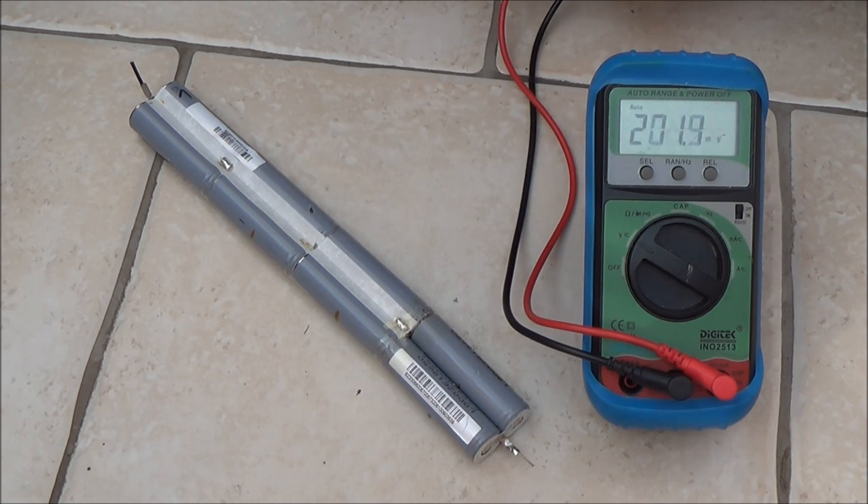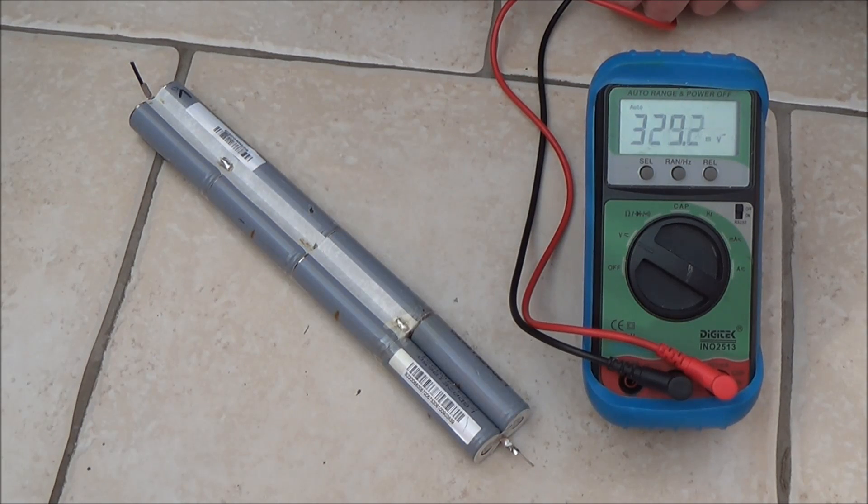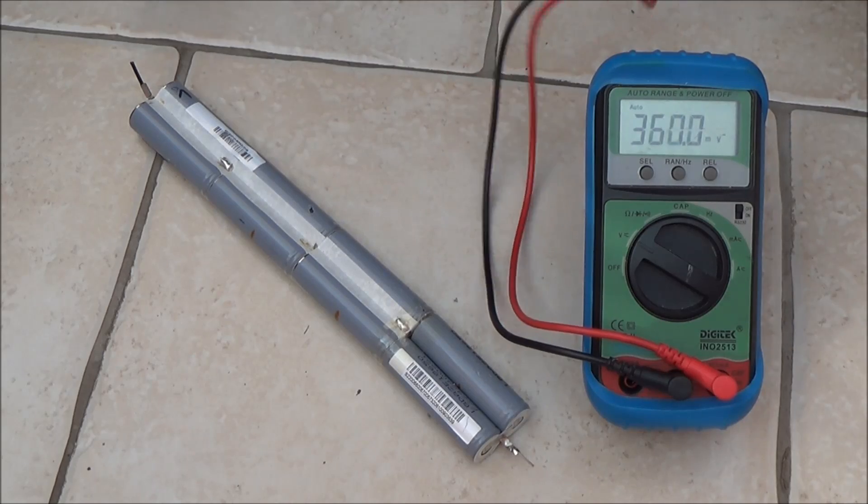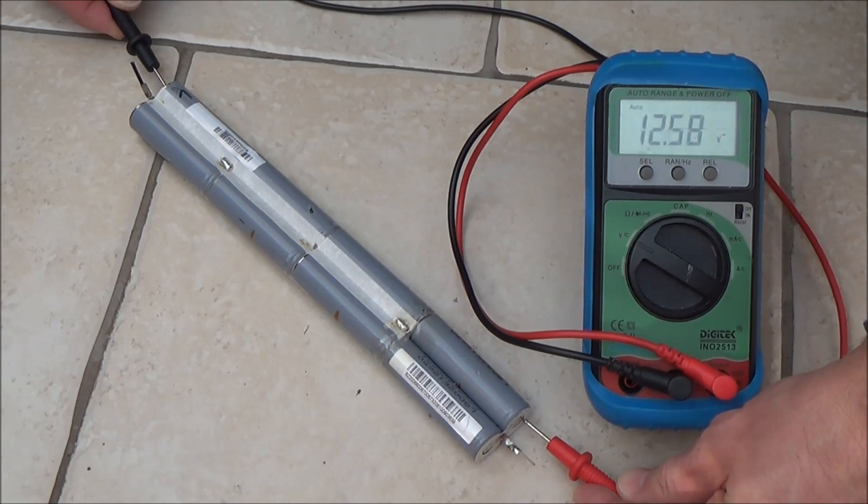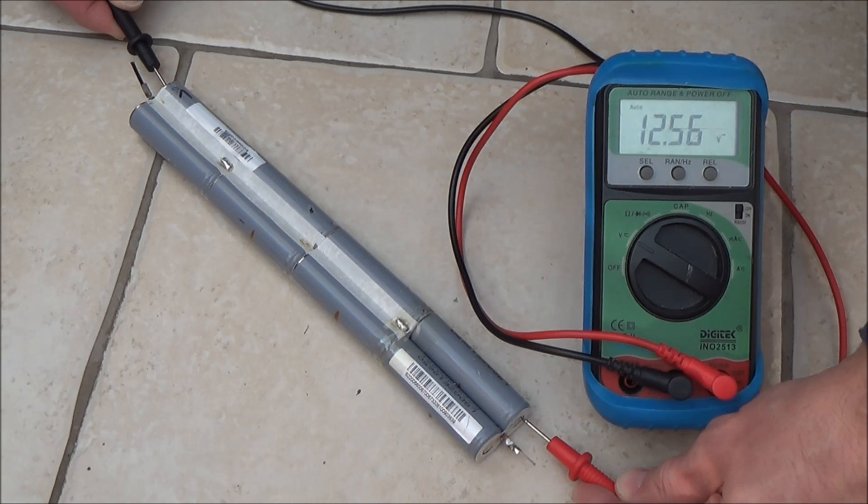Right, okay, we've got the meter out and we're just going to test the current voltage prior to charging. And we're getting 12.5756 volts there. So we'll stick it on the solar panel, keep our eye on it and see if we can charge it up.